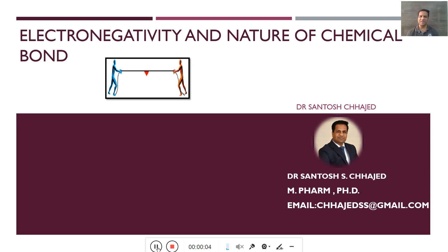Hello everyone, myself Dr. Santosh Chajad, M-Pharm PhD, Pharmaceutical Chemistry. In this video, I am going to describe the concept of electronegativity — some elements have affinity for bonded pairs of electrons. As a consequence of movement of electrons via bond, electrons spend comparatively more time around certain electronegative elements, and those elements acquire negative charge. This concept is very much like the game tug of war, where the mighty team always wins by pulling the rope towards their side. Similarly, some mighty elements pull the bonded pair of electrons towards themselves.